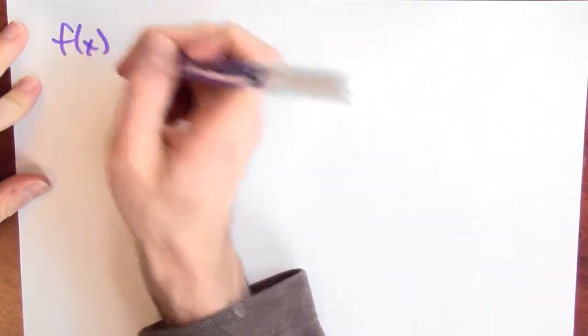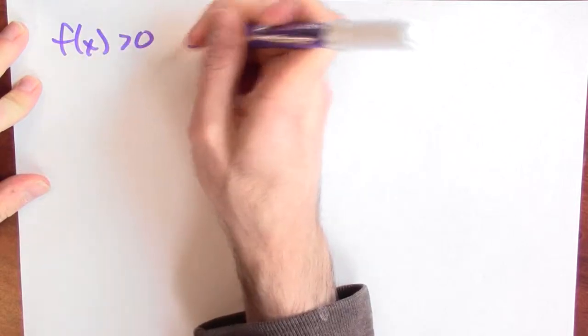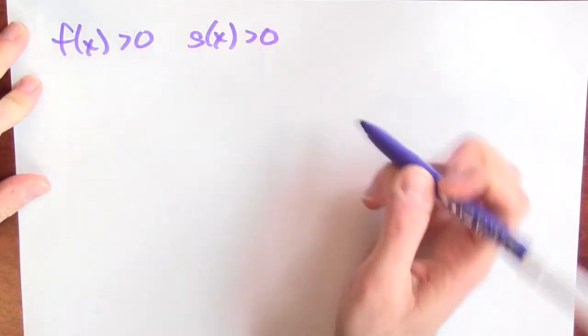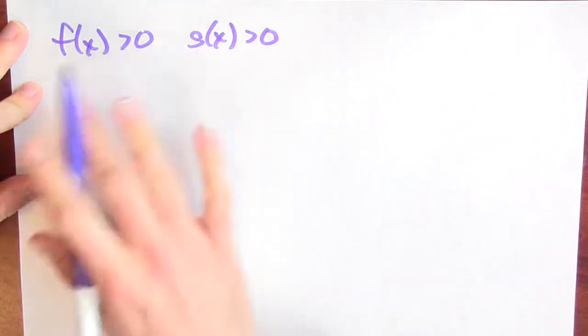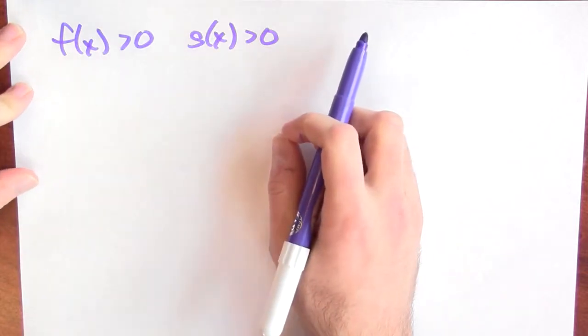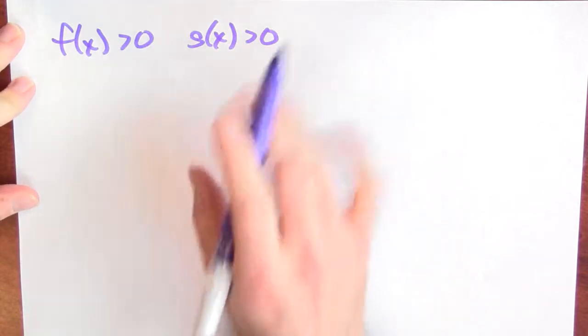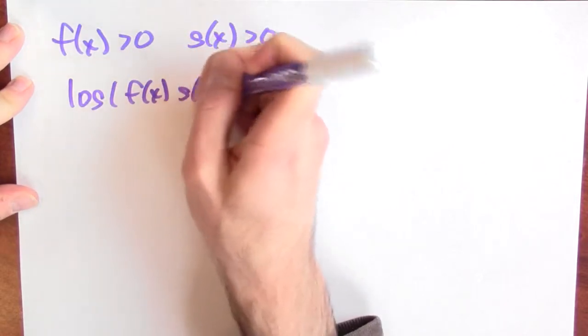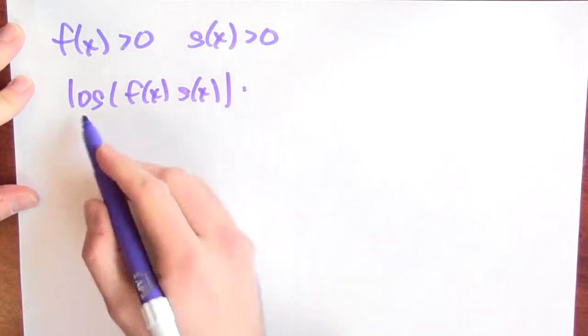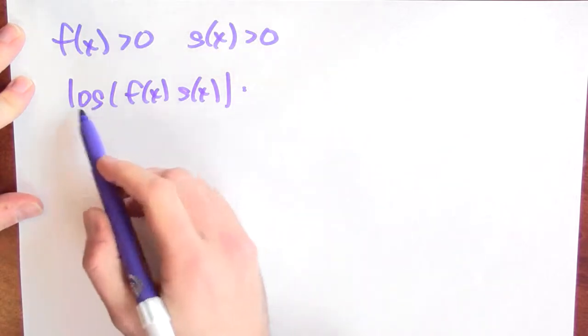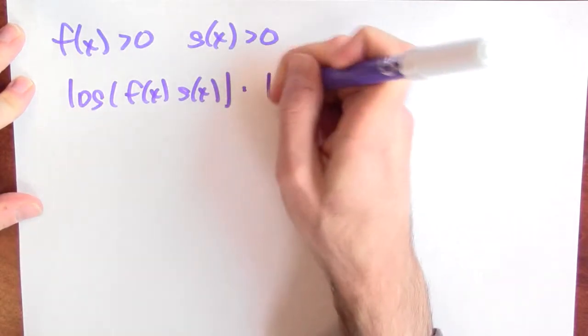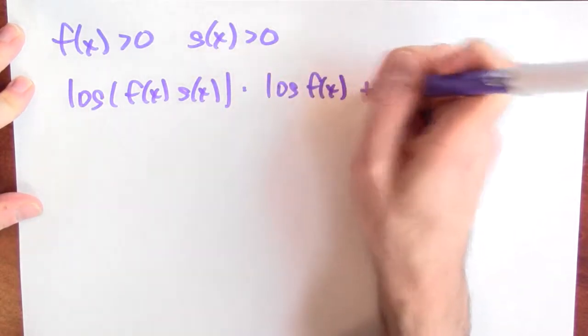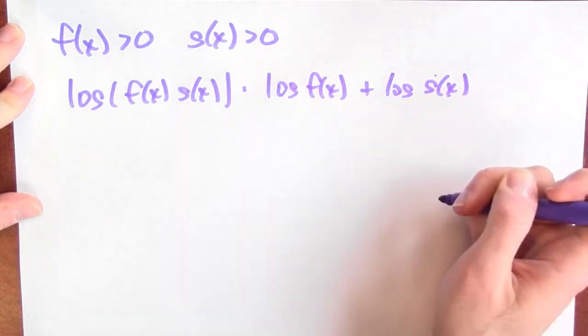Let's suppose that f of x is bigger than zero and g of x is bigger than zero, say for all x. I just want to do this for positive functions. Now I'm going to use logs. So let's take the log of f of x times g of x. And what do I know about logs? Logs turn products into sums. So the log of f of x times g of x is the log of f of x plus the log of g of x.